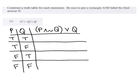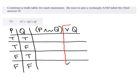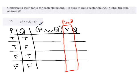Number 13: let's construct a truth table. Be sure to put a rectangle and label the final answer — if you don't do that, you will lose some points on the final. The final answer is the most dominant, which is the operator on the outside of parentheses. In this case, the disjunction — so I'm going to box it and label it as the final. This separates your truth table into two halves: the left side and the right side of the final.